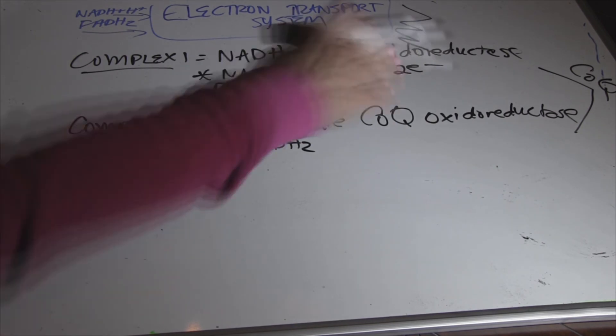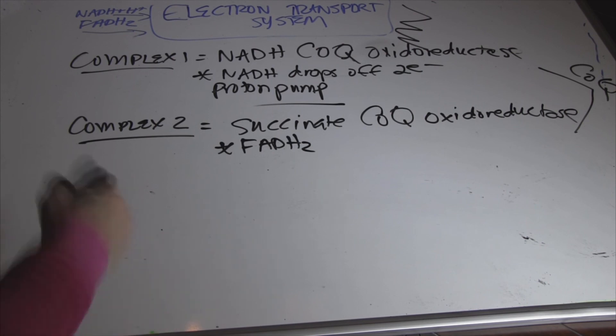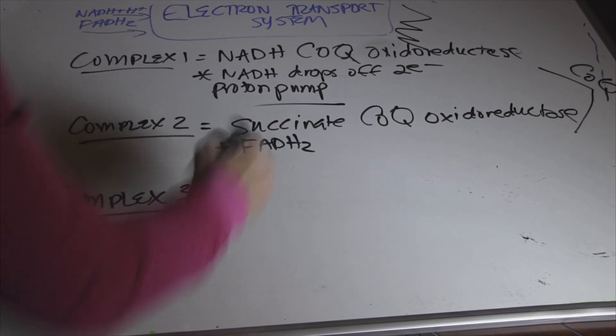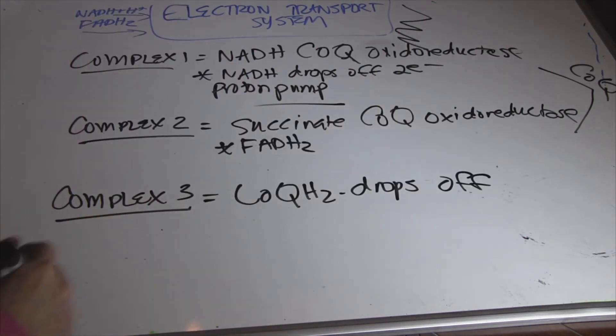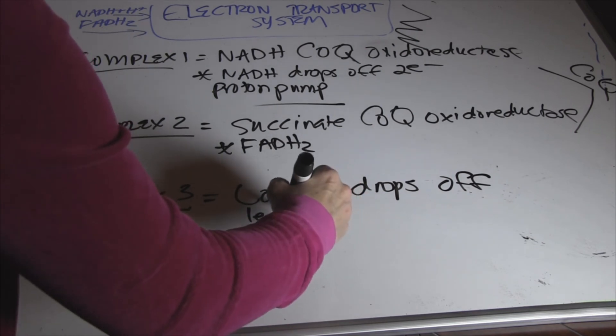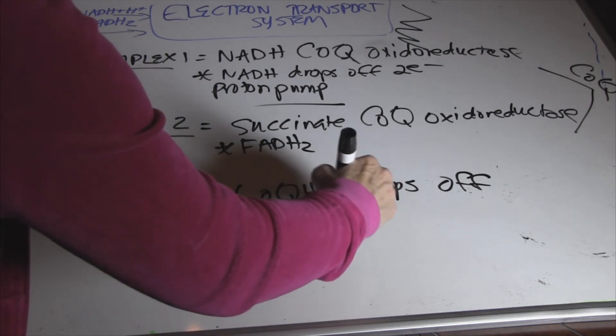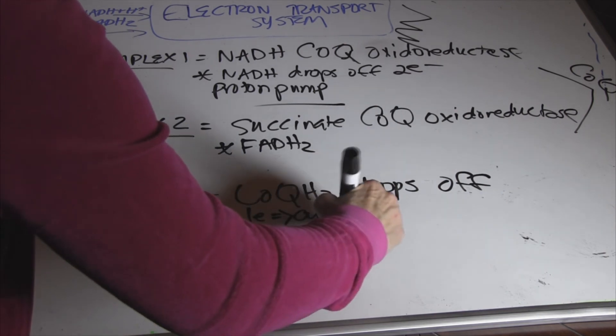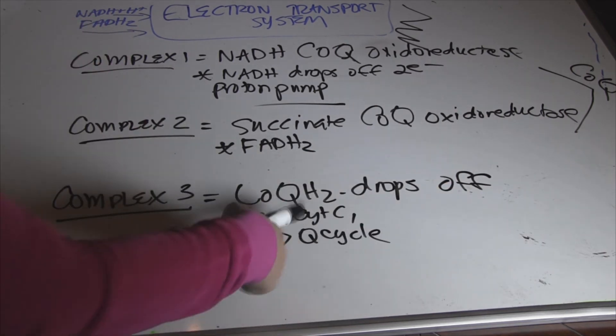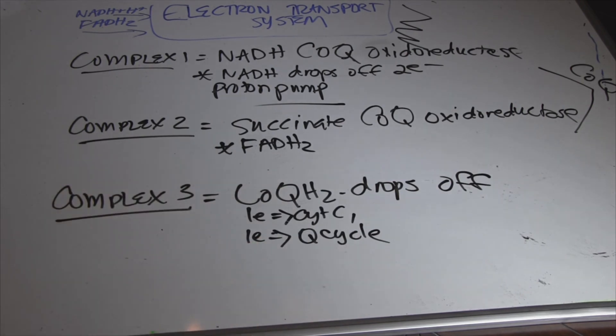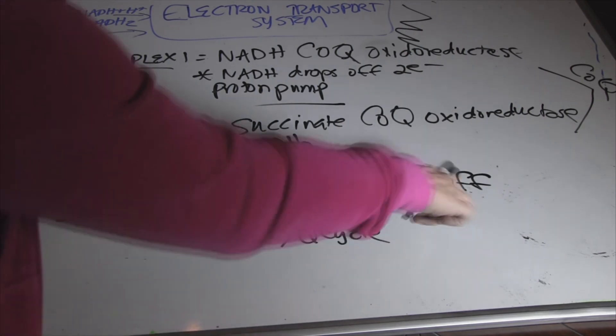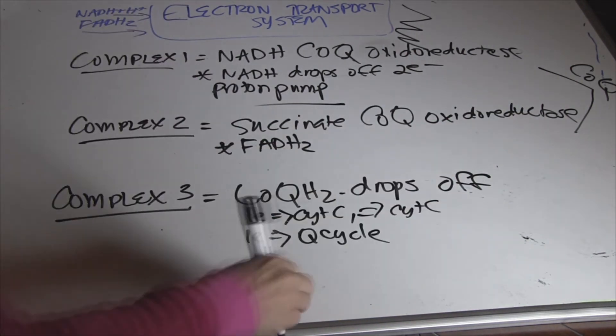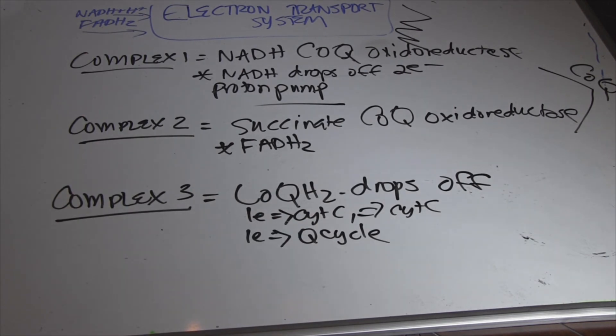Coenzyme Q, we had drop off at complex 3. One electron goes towards, we'll say, cytochrome C1. One electron goes to the Q cycle. Anyway, it goes to the iron, and then to the cytochrome C1, and then to cytochrome C, and then to the Q cycle. We don't need to go over that again.